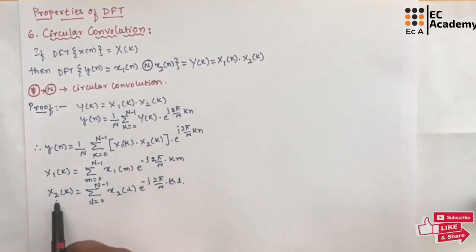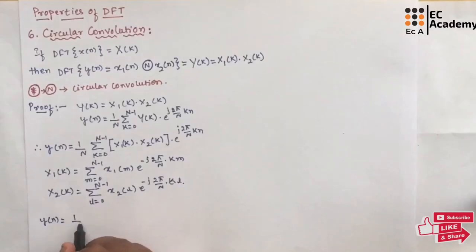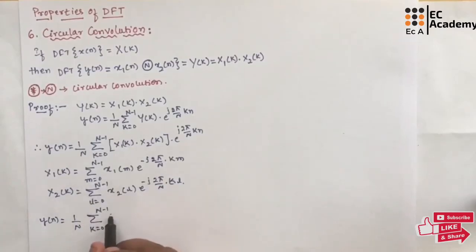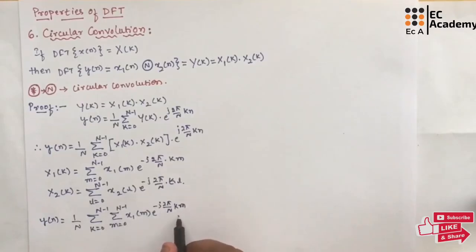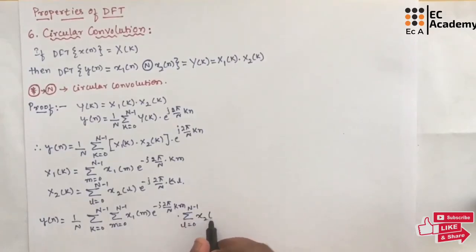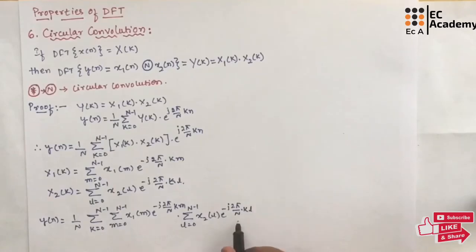Substituting the values of X1(K) and X2(K), we get Y(N) equal to 1/N summation from K=0 to N-1 of the summation from M=0 to N-1 of X1(M) into E to the power of -J(2π/N)KM, into the summation from L=0 to N-1 of X2(L) into E to the power of -J(2π/N)KL, into E to the power of J(2π/N)KN.